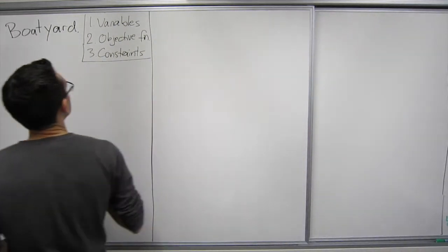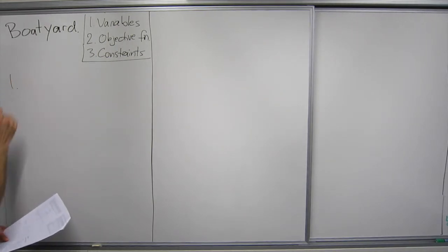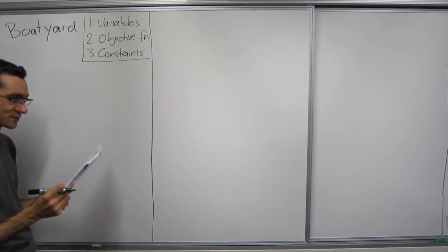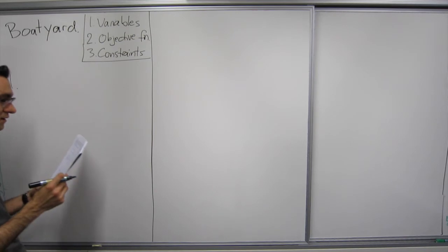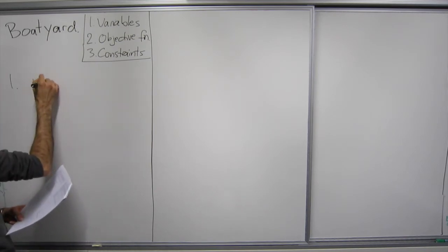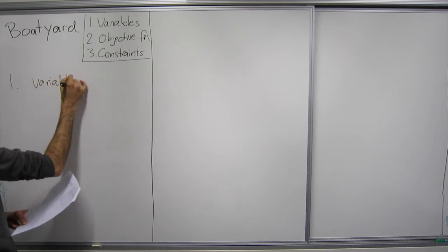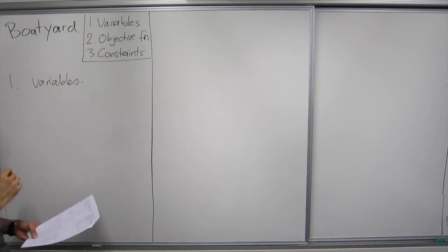So we have our variables are going to be the three types, the numbers of the three types of boats. So let's see,